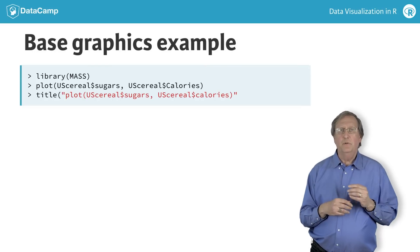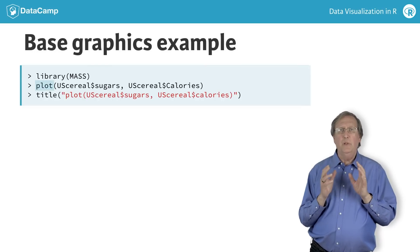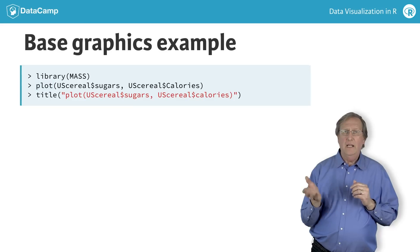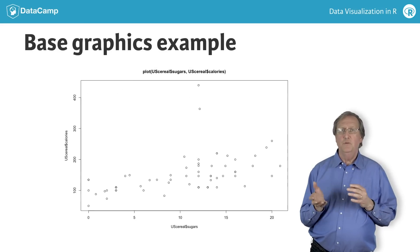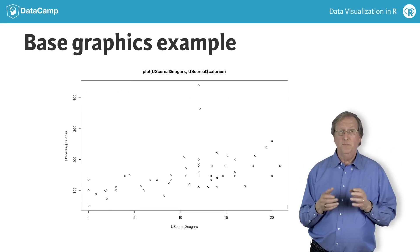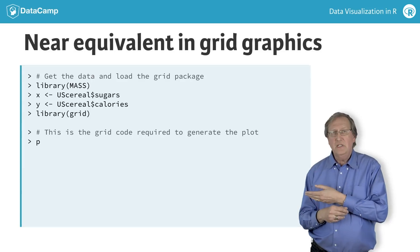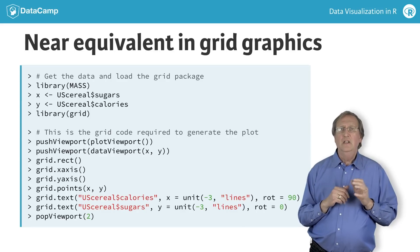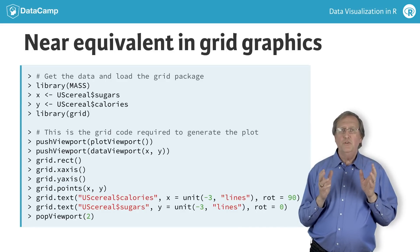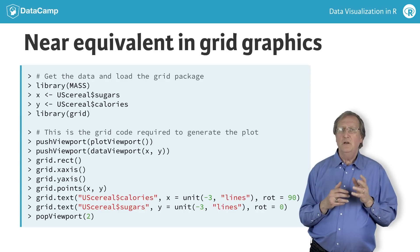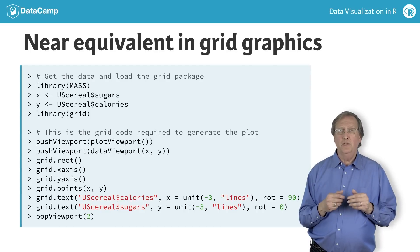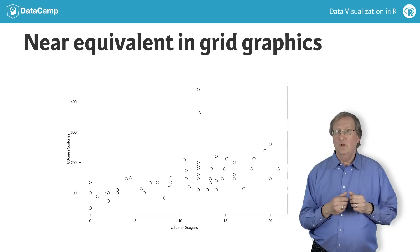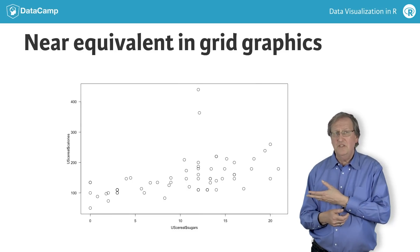This first example uses the base graphics plot function to generate a simple scatter plot of calories versus sugars from the U.S. cereal data frame in the MAS package. The second example uses grid graphics to create essentially the same plot. Grid graphics offers much greater power and flexibility than base graphics, but this comes at the price of a steeper learning curve and greater effort required to create simple plots like this one.